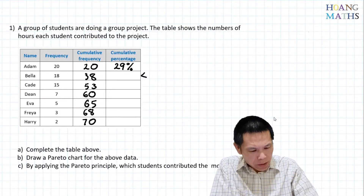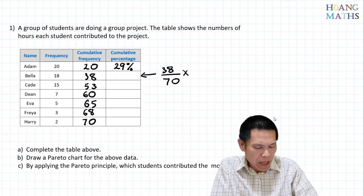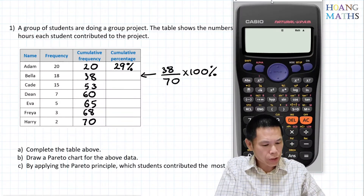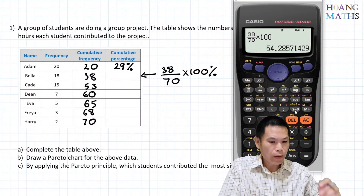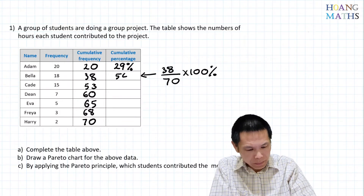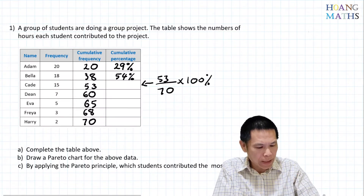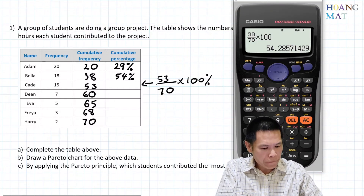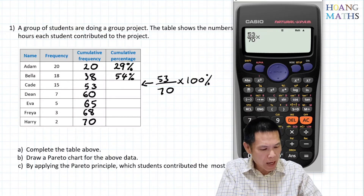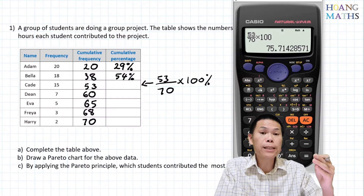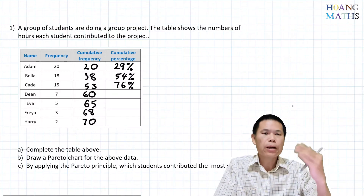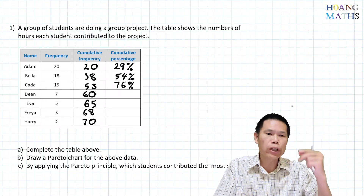For the next value: 38 divided by 70 times 100%, and then 53 divided by 70 times 100% gives 76%. Now that you know how to work out the cumulative percentage, I'll quickly write the rest down to save time.